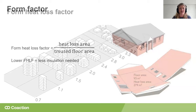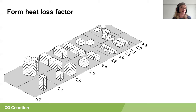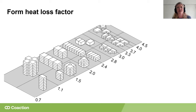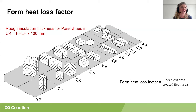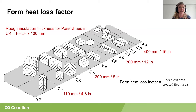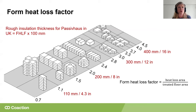A lower form heat loss factor means less insulation is needed to meet the passive house standard or any other standard. Roughly speaking, for a form heat loss factor of two — meaning two square meters of wall, roof, or floor per square meter of floor area — we need about 200mm of mineral wool insulation in the UK climate. If you've got a form heat loss factor of four, like a small bungalow, you're going to need an absolute shed load of insulation.